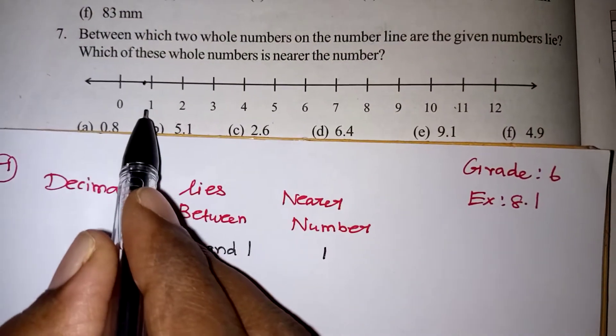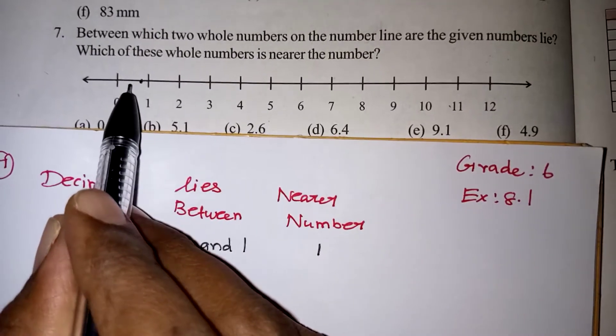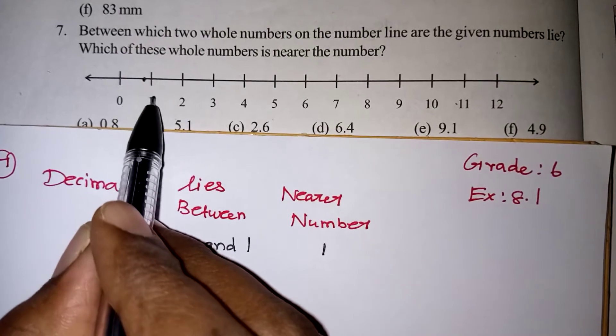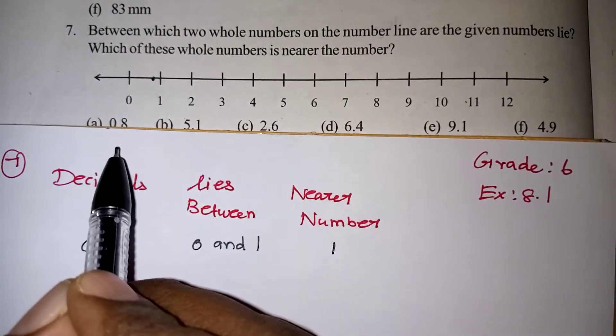Children, you can keep it in your mind. For 0 to 1, 0.5 is the middle number. If the number is coming after 0.5, it will be nearest to 1. Less than 0.5, it will be nearest to 0.